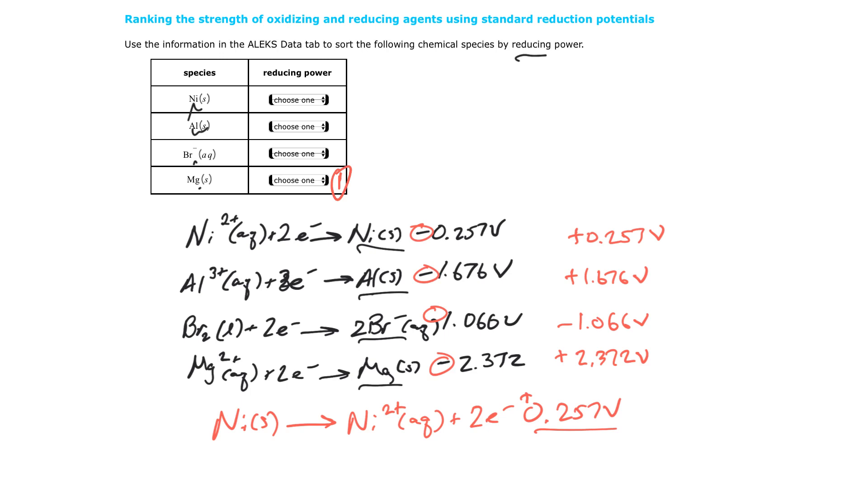It gives away, it becomes oxidized so that whatever it's giving it to will be reduced. So the one with the highest push to give it away is the one that's going to give it away to more things. So this is my highest number. So it's number one. Then my aluminum is the second number. It's number two. Then my nickel is number three.